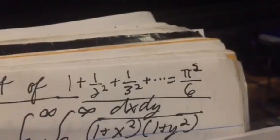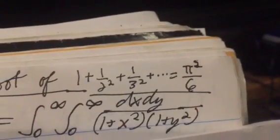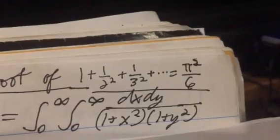That 1 plus 1 over 2 squared plus 1 over 3 squared plus 1 over 4 squared, and you add all that up, you get pi squared over 6.